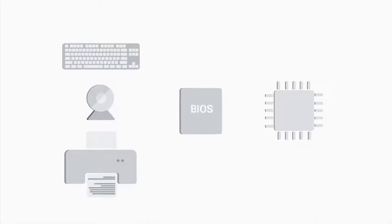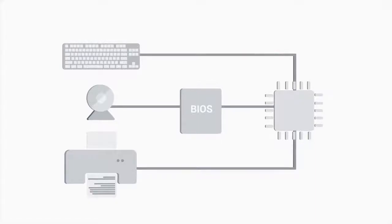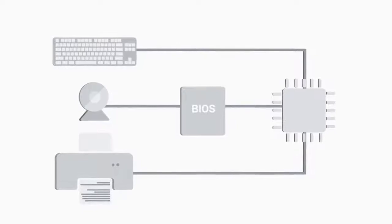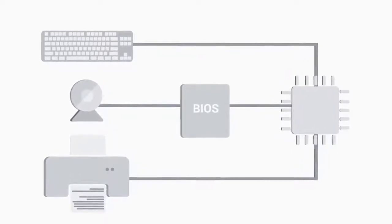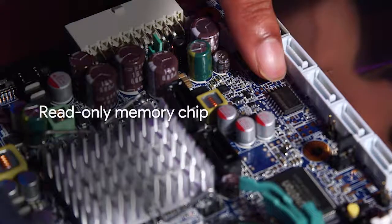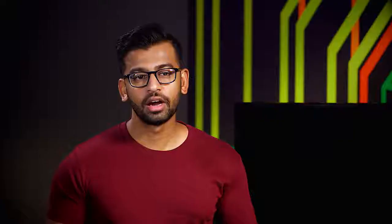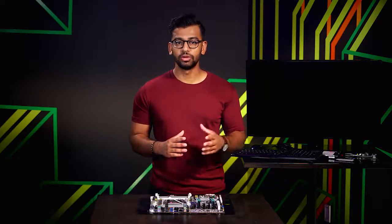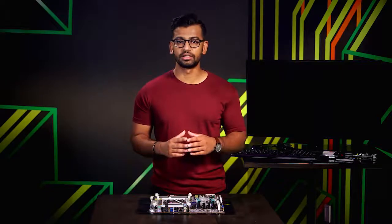Our CPU doesn't know that there is a device it can talk to, so it has to connect to something called the BIOS, or Basic Input Output Services. The BIOS is software that helps initialize the hardware in our computer and gets our operating system up and running. Unlike programs you're used to running, like a web browser, the BIOS isn't stored on a hard drive. Our motherboard stores the BIOS in a special type of memory called the Read-Only Memory chip, or ROM chip. Unlike RAM, ROM is non-volatile, meaning it won't erase its data if the computer is turned off.